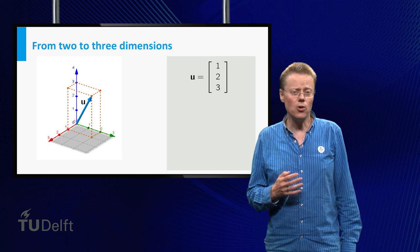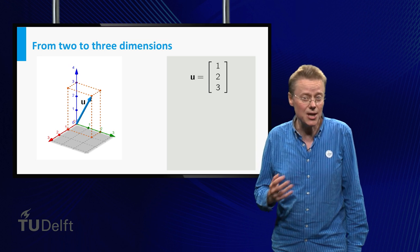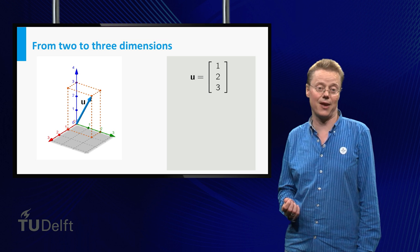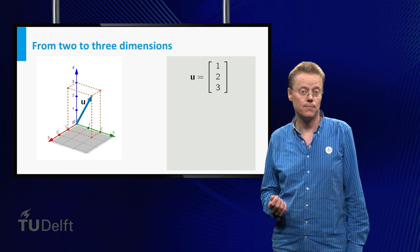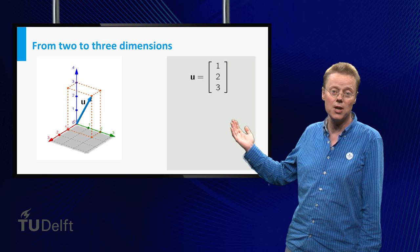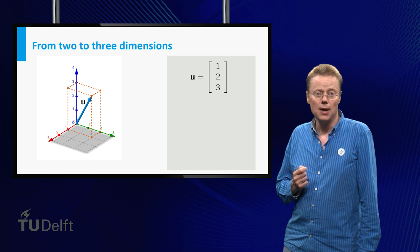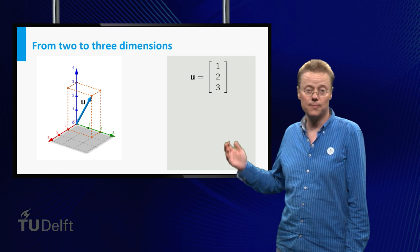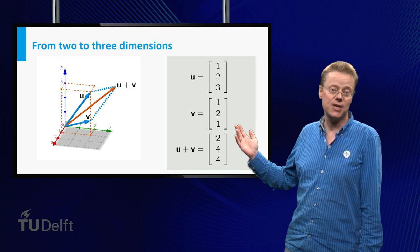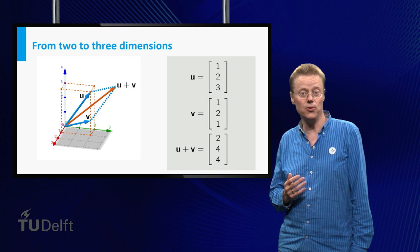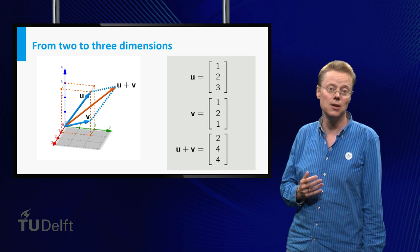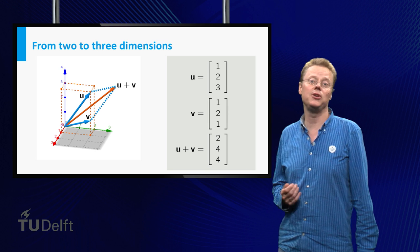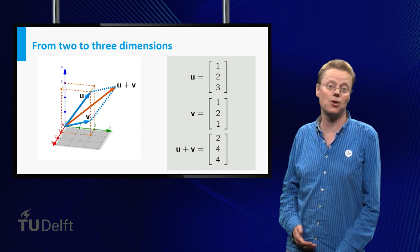The examples up till now were all given in two dimensions. In three dimensions you can take exactly the same approach. A vector has a direction and a length and can be represented by an arrow. Here you see the vector with endpoint (1, 2, 3). Adding the vector (1, 2, 1) leads to the vector (2, 4, 4). This can be seen by moving the second vector's tail to the first vector's head and traveling along the connected arrows. Alternatively, the sum of u and v can be easily obtained by adding just the components of the vectors.